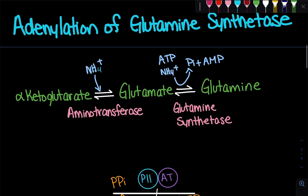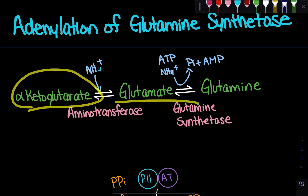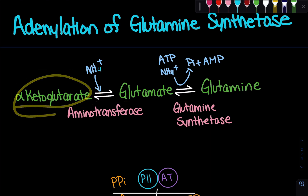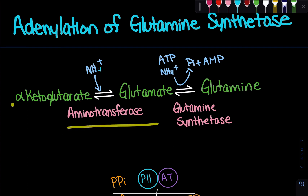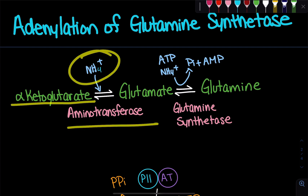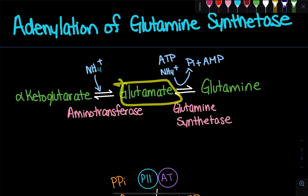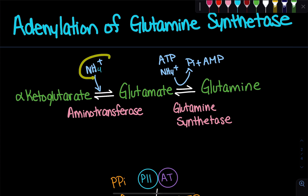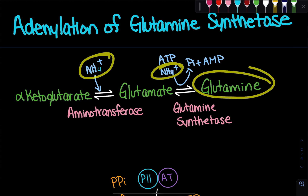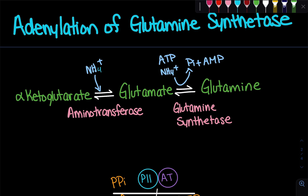First, it's important to understand how we get glutamate. Glutamate comes from alpha-ketoglutarate via an aminotransferase reaction. When alpha-ketoglutarate gains an amino group, it becomes glutamate. Then when glutamate gains an ammonia group, it becomes glutamine. So essentially we need to gain two ammonia groups to get to glutamine, and we use ATP as the energy source, producing phosphate and AMP.